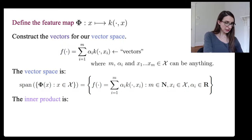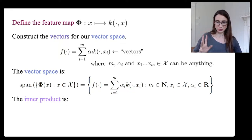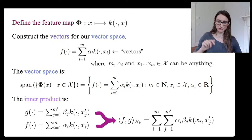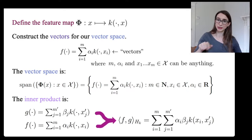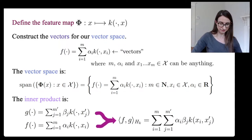Now we have to define the inner product. Given f and g, you take the two sums out on the outside, multiply the coefficients together, and then the kernels get evaluated accordingly. We'll then check that this is actually a valid inner product.